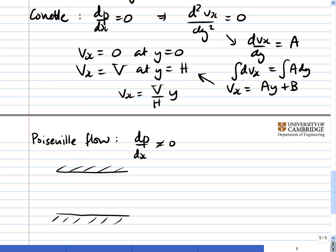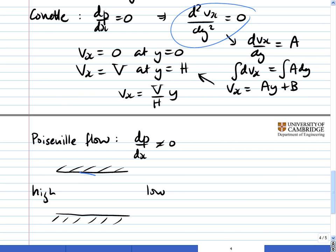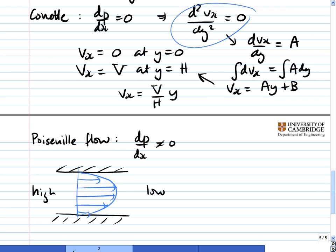In Poiseuille flow, on the other hand, there is a pressure gradient — high pressure on one side and low pressure on the other. Poiseuille flow is actually more relevant physically; you tend to find it more often, particularly in laminar flow in pipes. When you solve this second-order differential equation, you end up with a parabola for the velocity profile. Drawing in the velocity vectors, the flow looks parabolic, and I'll leave that solution up to you to do yourselves.